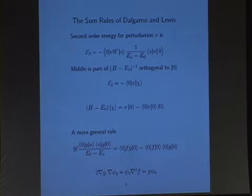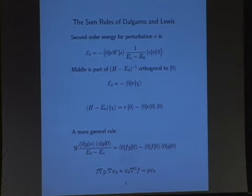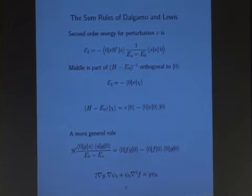Alex then, with Lewis, formulated some sum rules which became famous, which are famous, just to see how they work. If we take the second order energy for some perturbation V, we get that expression there, and what I've done there is simply to move the summation over the things that depend on S into the middle. And when you look at that, you can see that this middle bit then is just the projector of that resolvent, or 1 over H minus E0, onto this set of states. And because we've taken out the ground state, it's the ones that are orthogonal to that.